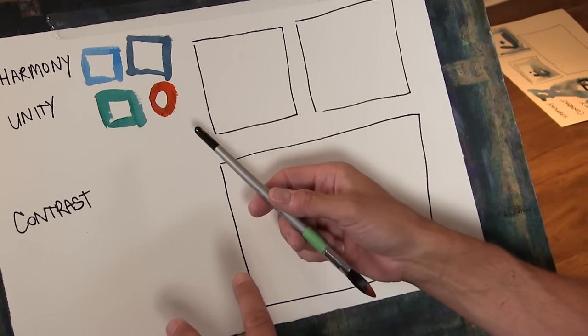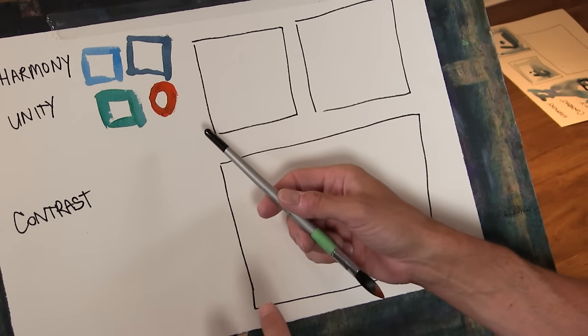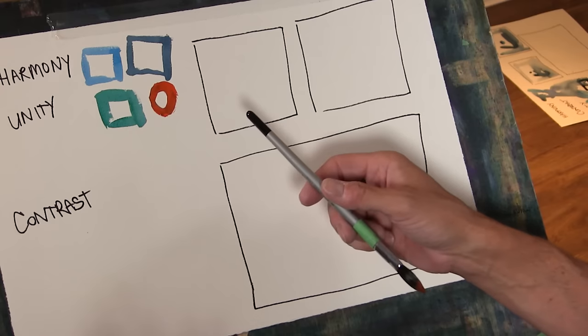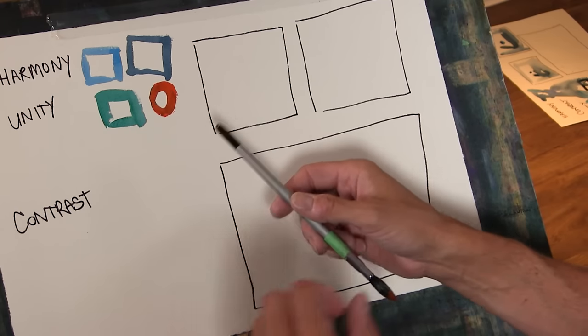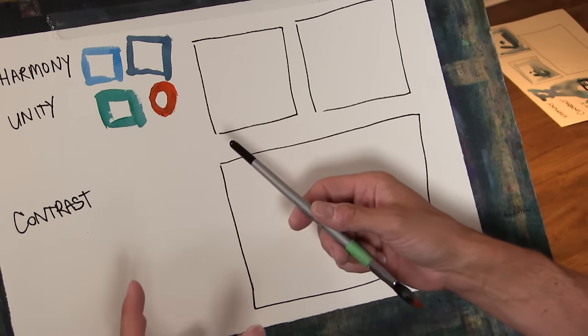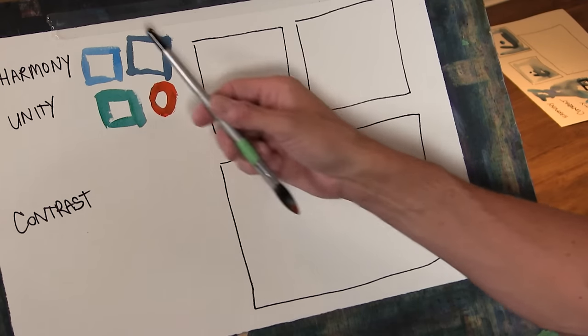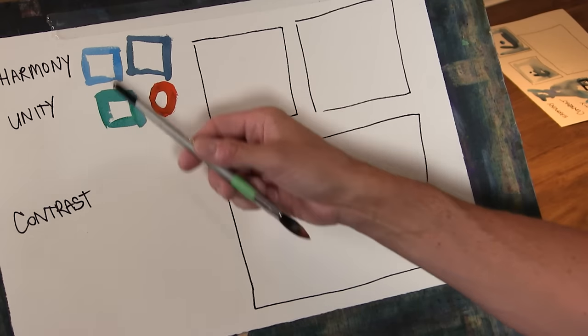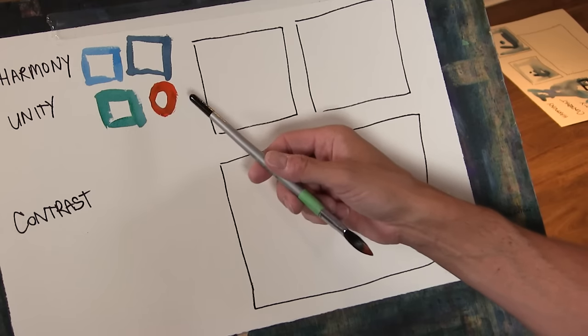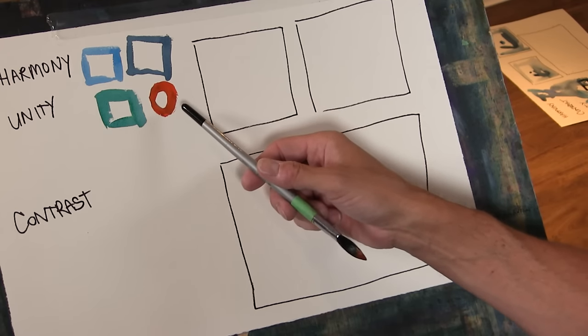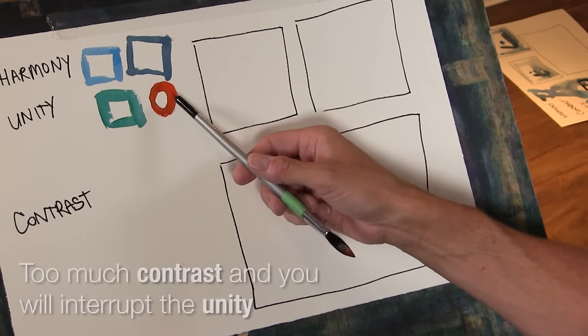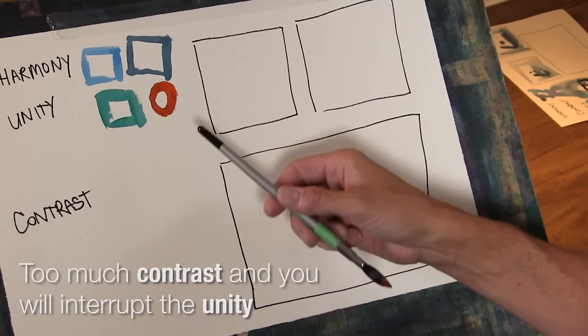When we put areas of high contrast next to each other that draws the eye, so that's our center of interest or those are edges that our eye is going to follow. The problem with just contrast like this is like that Sesame Street game where one of these things doesn't belong. It's interrupted the unity of these things going together.